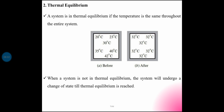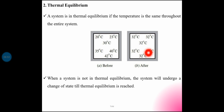If the temperature is the same throughout the entire system, the system is in thermal equilibrium. Thermal equilibrium means all locations are at the same temperature — there is no temperature gradient within the system. That is the criteria for thermal equilibrium.